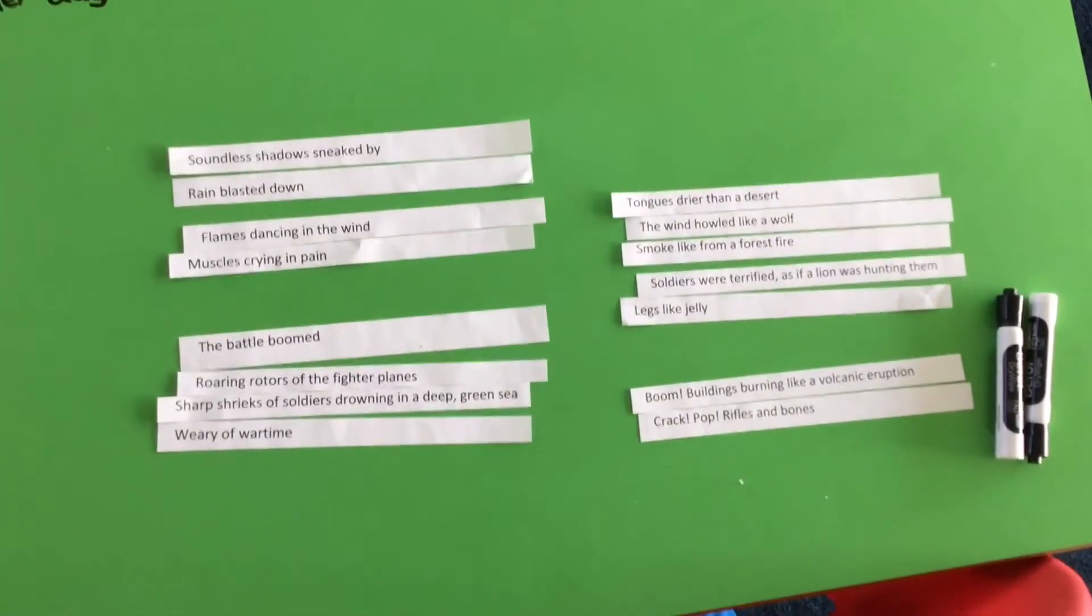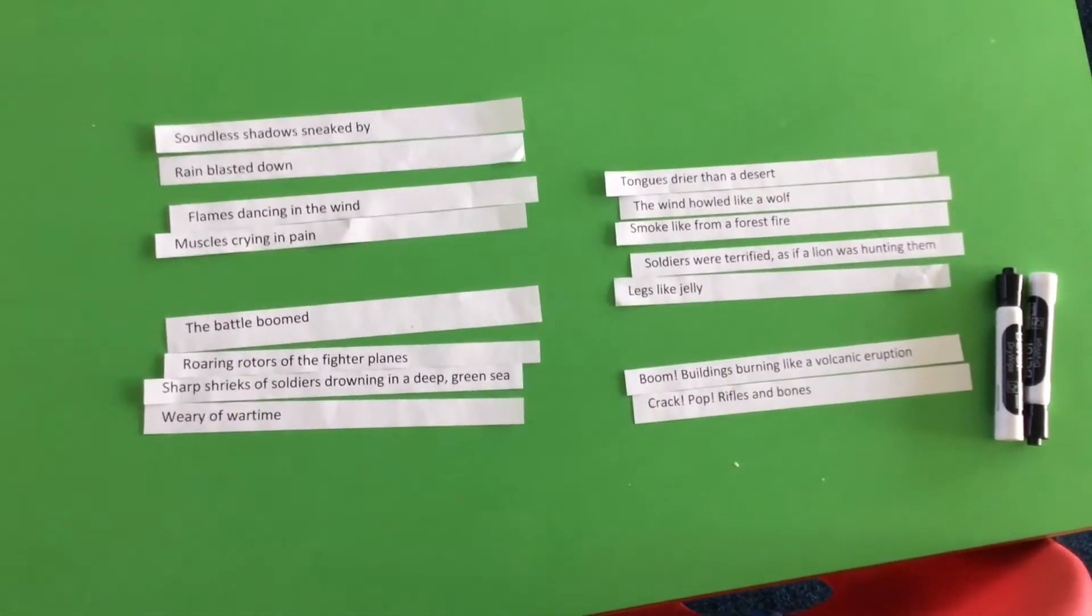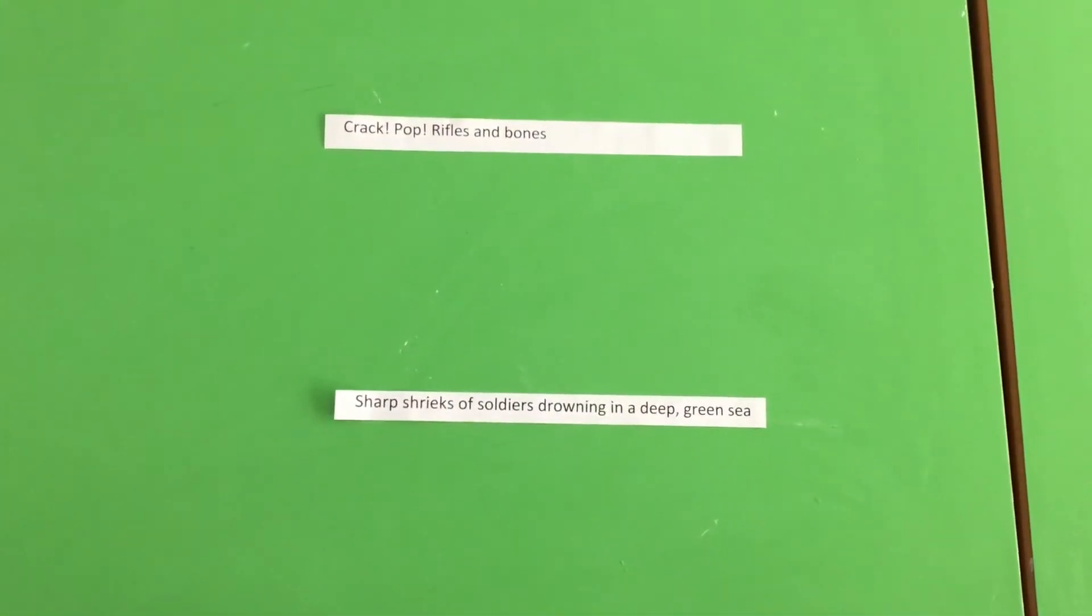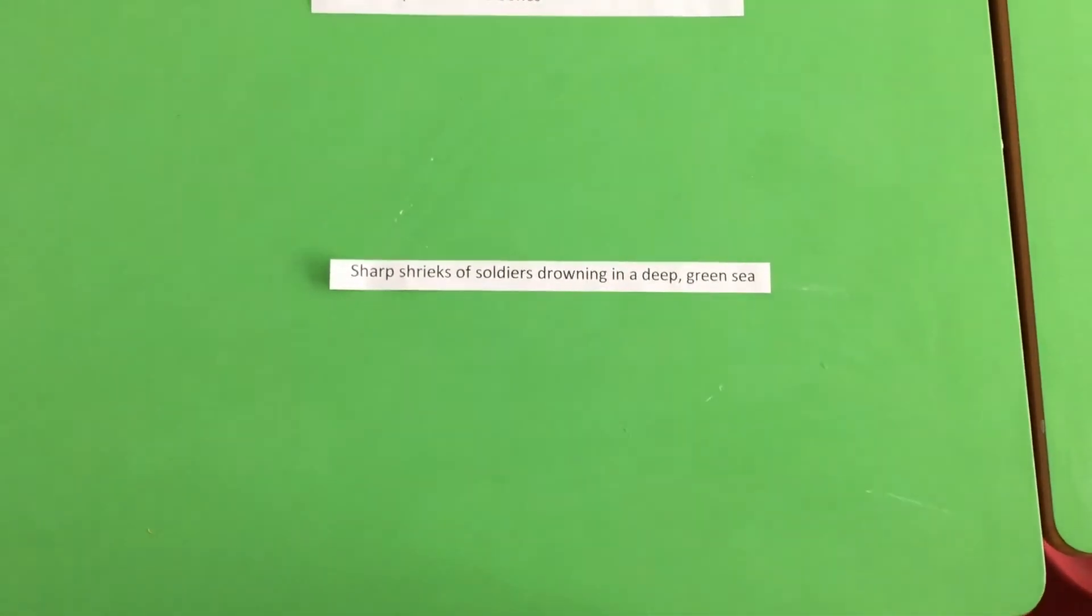See if you can come up with your own way to group these lines and perhaps make them into a poem of your own. Another technique you can use is to have one sentence or phrase and see if you can come up with a rhyming couplet. So a second line that would turn it into a rhyming couplet. So we've got these four lines here: muscles crying in pain, smoke like from a forest fire, crack pop rifles and bones, sharp shrieks of soldiers drowning in a deep green sea. See if you can pause the video and see if you can come up with, for those four lines, a rhyming couplet for each of those. Pause the video now and I'll reveal my ideas afterwards.